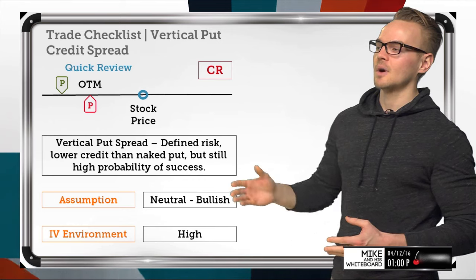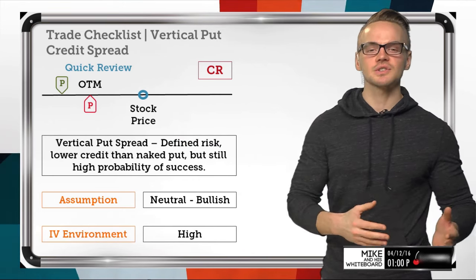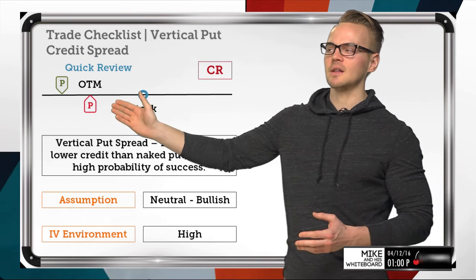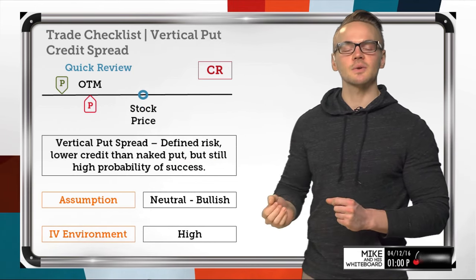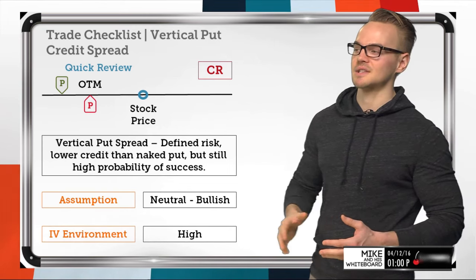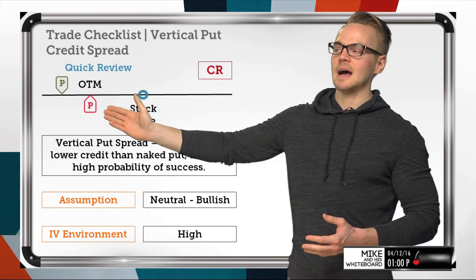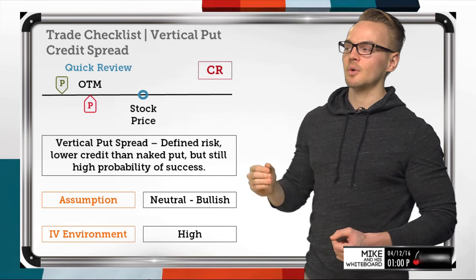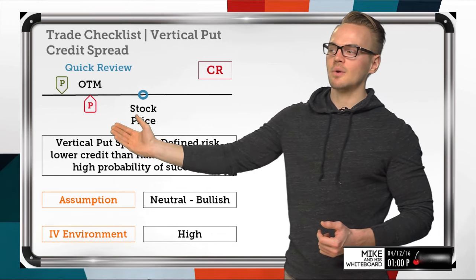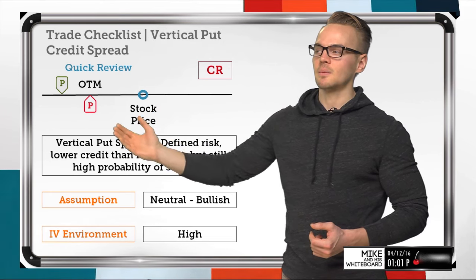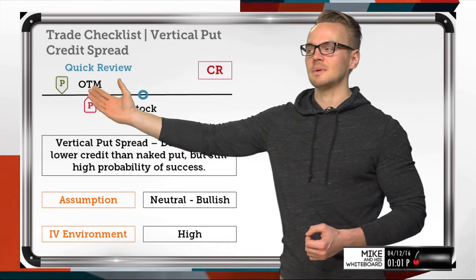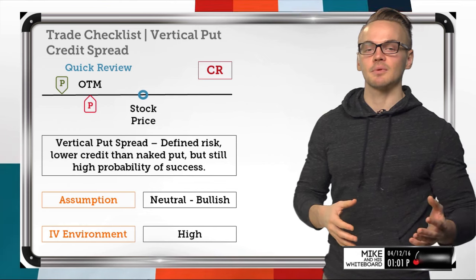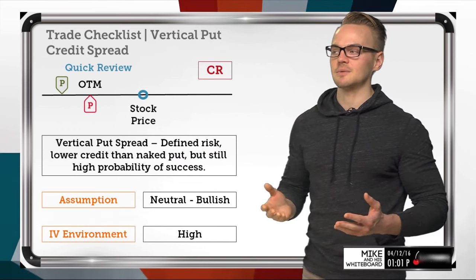Let's get into the very basics of the put credit vertical spread. We're looking at the same situation as yesterday except we're defining our risk. Here we've got the stock price, and when we're selling an out-of-the-money credit spread on puts, the contracts are going to be below the stock price. We sell an out-of-the-money option and buy a further out-of-the-money option to define our risk, routing the whole thing for a net credit.